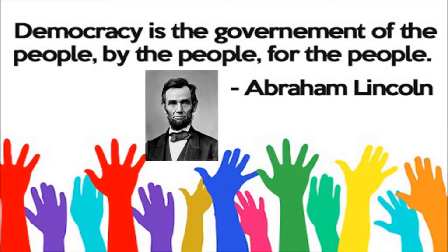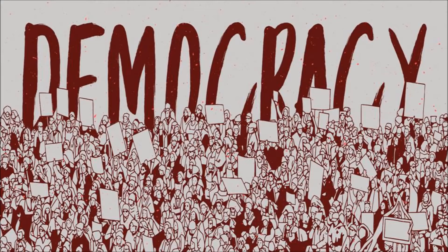Now let's look at the features of democracy. From the definition, various questions arise: Who are the rulers? What kind of election constitutes a democratic election? Who are the people who can elect rulers or get elected as rulers? And finally, what form of government is a democracy? Let's understand the features of democracy in detail.